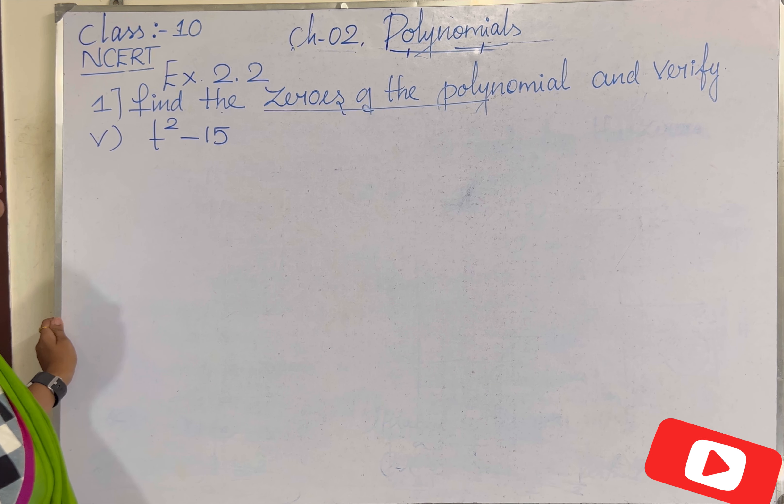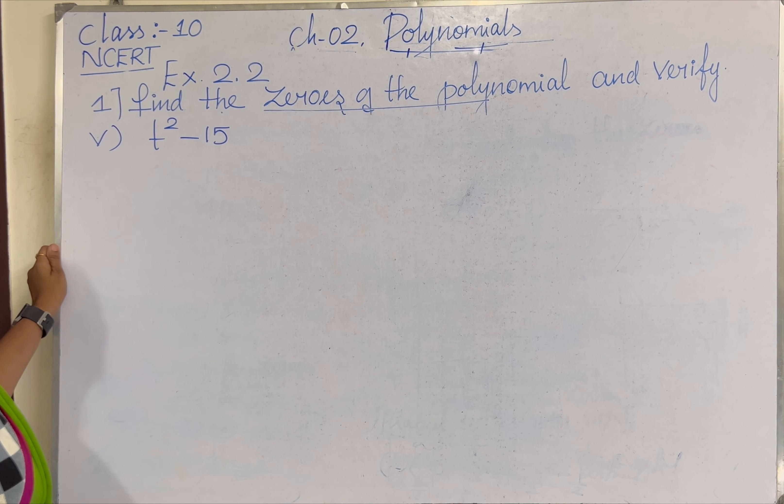Class 10 NCERT, Chapter No. 2, Polynomial. Exercise No. 2.2, Find the Zeros of the Polynomial and Verify the Relationship between the Zeros and their Coefficient. Subdivision No. 5, T²-15.